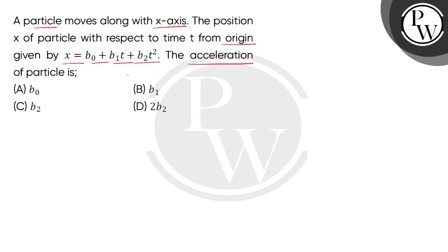The acceleration of particle is. So, given to us is the position x of the particle with respect to time as b0 plus b1t plus b2t squared, where b0, b1 and b2 are constants. Now we need to find what is the expression for the acceleration of the particle.